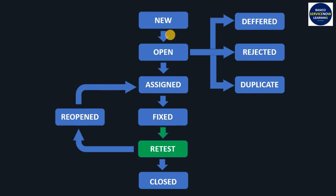But if the tester finds that the fix done by the developer is working fine and the functionality is working as expected, then they will close the bug. This is basically the positive flow where a bug status transitions from New to Closed.